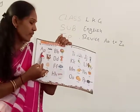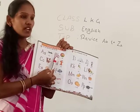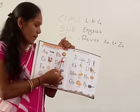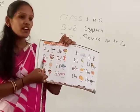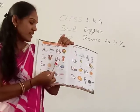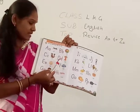A for? B for Ball. Ball. C for? D for Dog.